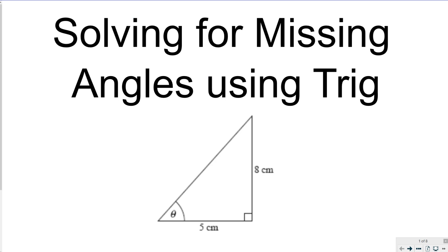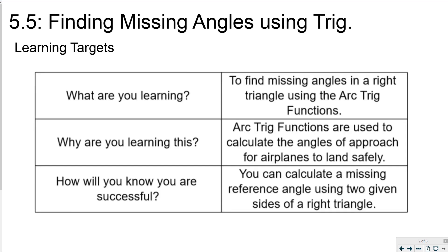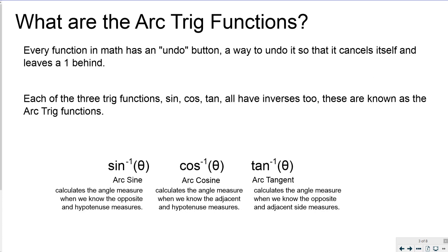Hey guys, welcome to the next video on solving missing angles using trig. In this video you're going to learn to find missing angles in a right triangle using the arc trig functions. The arc trig functions are used to calculate the angles of approach for airplanes to land safely, and you can calculate a missing reference angle using two given sides of a right triangle.